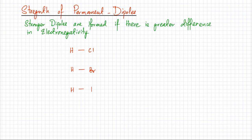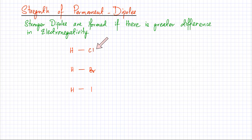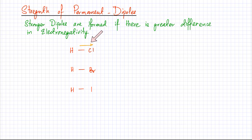Looking at these three molecules, chlorine, bromine, and iodine go down group 7, and electronegativity decreases down the group. Chlorine is very electronegative, so it is going to attract electrons very strongly. I'm going to draw a bigger arrow to represent that chlorine is attracting the bonded electrons in this molecule towards itself very strongly.